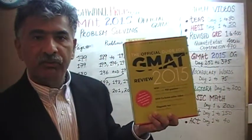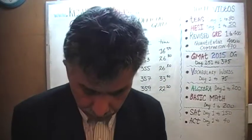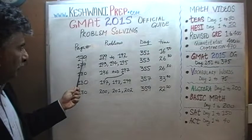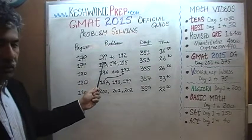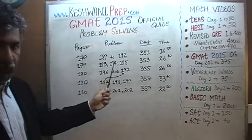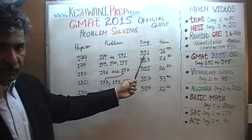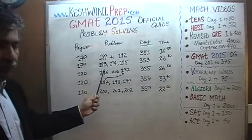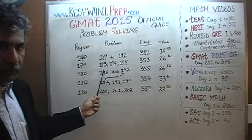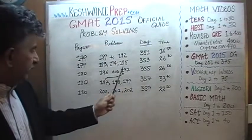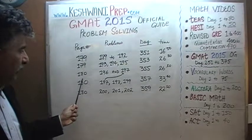Let's begin. We'll begin with page number 179. On page 179 you will see problem numbers 189, 190, 191, and 192 — solutions to those four problems were presented on day number 351. On the same page, page 179, you will find the solutions to problem numbers 193, 194, and 195 on day number 353.